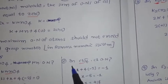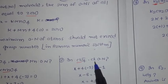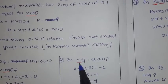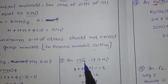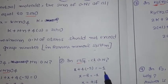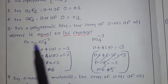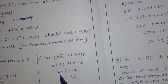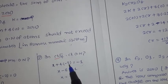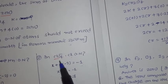Second example: in ClO4 minus, what is the chlorine oxidation number? Assume X. X plus 4 times minus 2 (oxygen's general oxidation state) equals minus 1 (polyatomic ion charge). Simplifying: X minus 8 equals minus 1, so chlorine oxidation number is plus 7 in ClO4 minus.